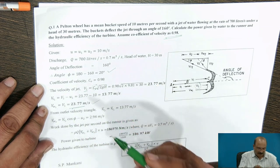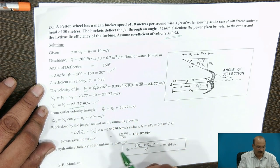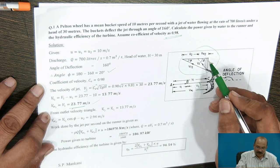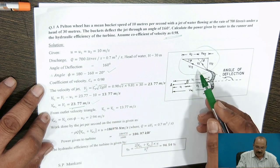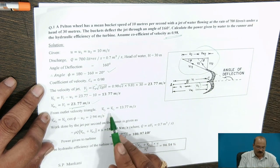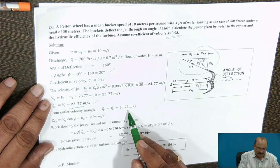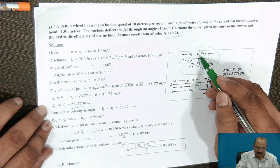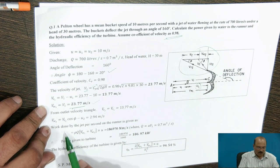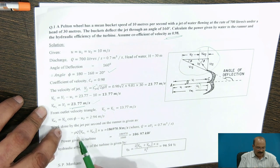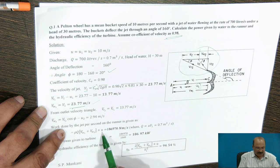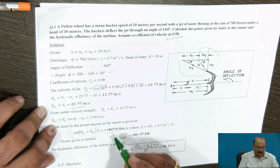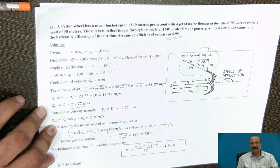VW1 and VW2 are both required for calculating hydraulic efficiency. From the outlet triangle, we calculate VW2. VR2 equals VR1 for Pelton turbines; VR1 has already been calculated as 13.77. So VW2 equals VR2 cos(phi) minus U2. The work done by the jet per second on the runner is given as rho Q into (VW1 plus VW2) into U. This gives the work done in watts; dividing by 1000 gives kilowatts.